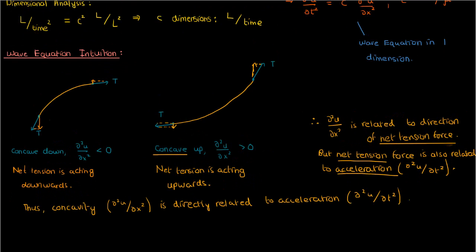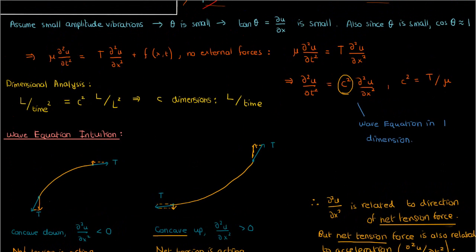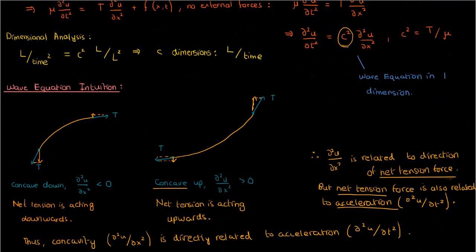And this is the intuition of the wave equation: the concavity of the string is directly related to its acceleration. In fact, as we just derived, they happen to be directly proportional to each other, separated only by the proportionality constant c squared. So fundamentally, the wave equation is just a fancier statement of Newton's second law, at least for a string.